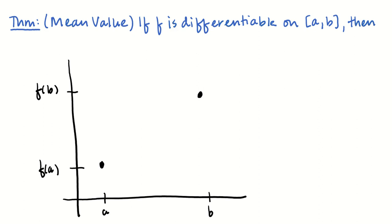What we're saying here is that there's some slope of the line connecting these two points. We call that the secant line. That has slope given by f of b minus f of a divided by b minus a.